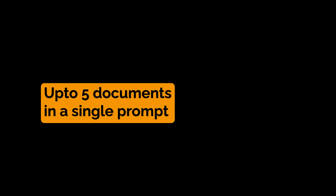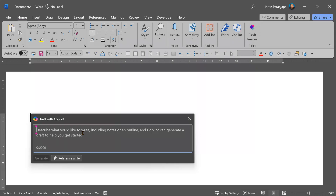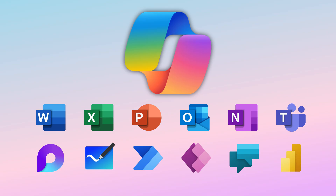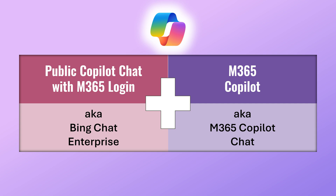In Microsoft 365 Copilot Chat, you can refer to up to five documents in a single prompt, which is a great powerful feature. Remember, M365 Copilot Chat is just one part of M365 Copilot. There are additional Copilot experiences in every Office app like Word, Excel, PowerPoint, Outlook, OneNote, Loop, and more. So in summary, M365 Copilot Chat is most powerful and useful for corporate data — use that along with the embedded Copilot in Office apps. You also need to use the public Copilot with M365 login so that you get the best of both worlds with corporate data protection.